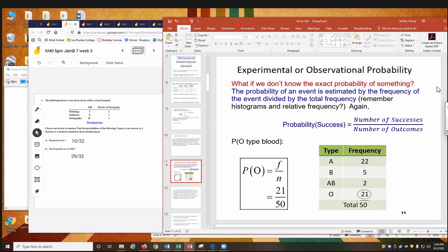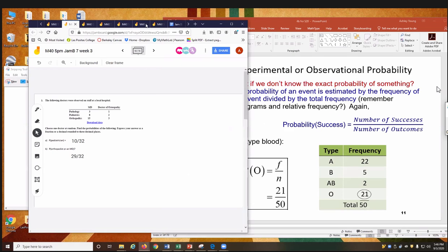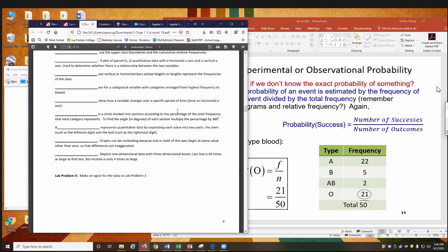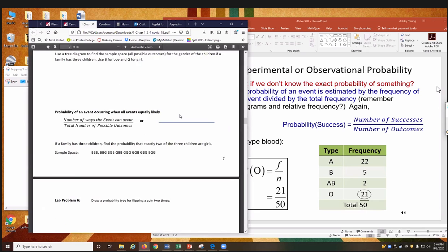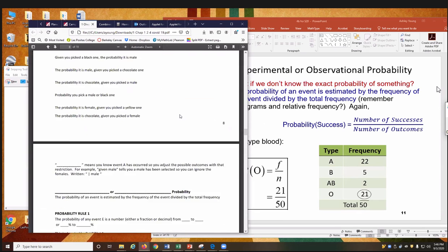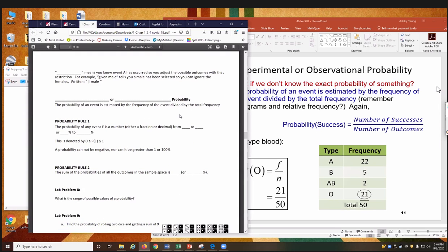All right. Now we're going to talk about experimental or observational probability. We're back to our notes. So you are in notes. Page nine. So the very top one on page nine, we did that last class. I didn't have you guys write it down. It's given, given means, you know, event A has occurred. So you adjust the possible outcomes with that restriction. For example, given male, if a male has been selected. So you can ignore the females. And it's written like this. Given that long straight line straight up and down. Given male.